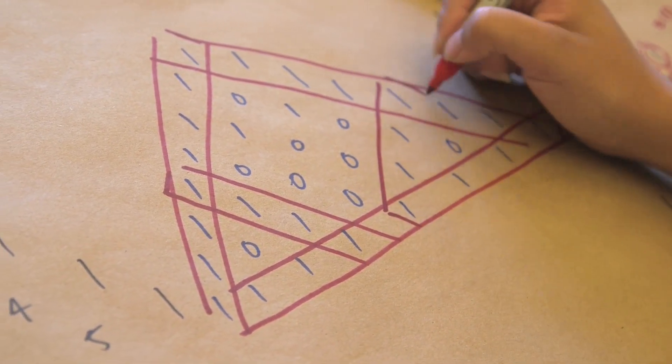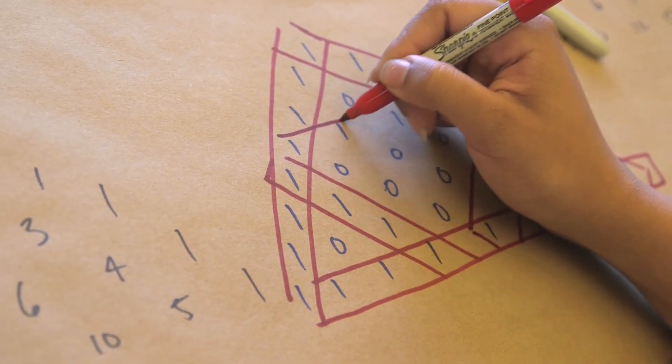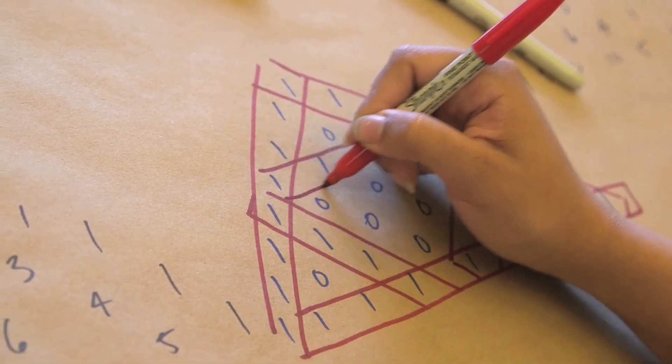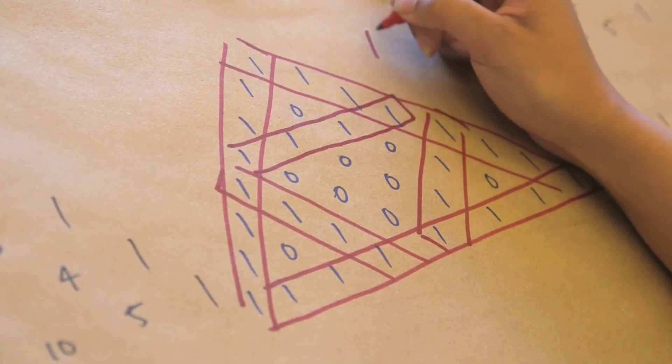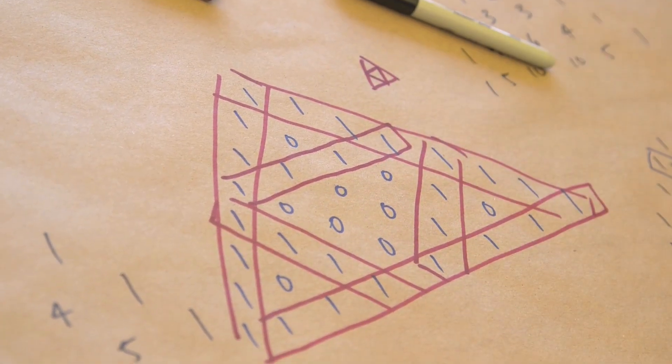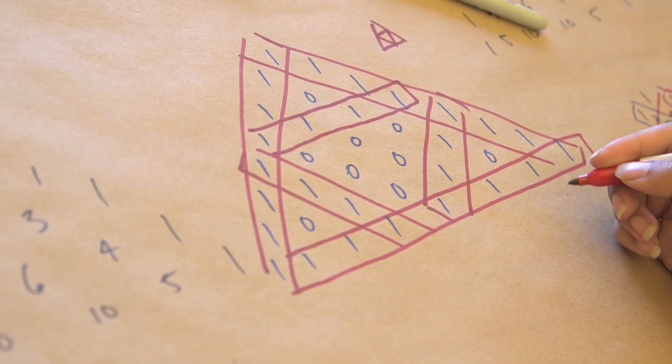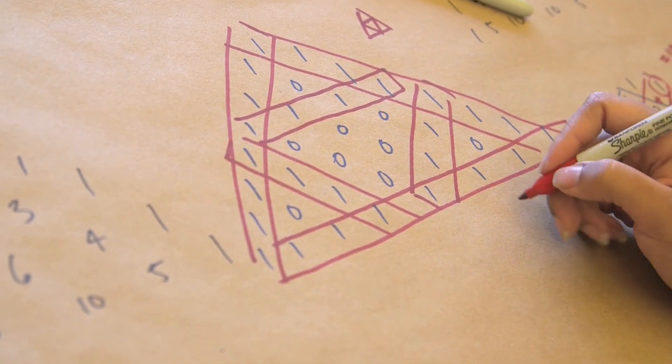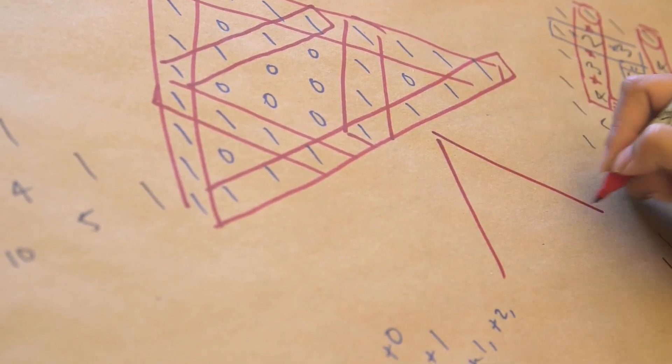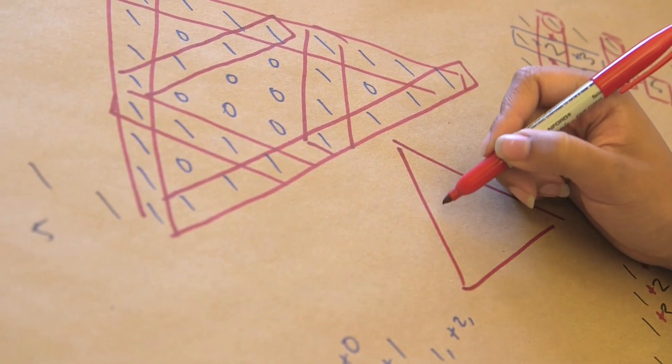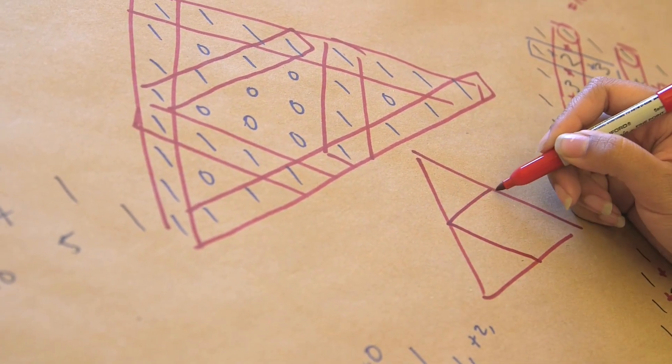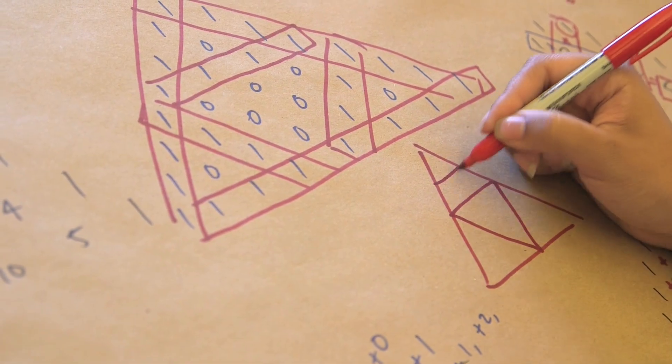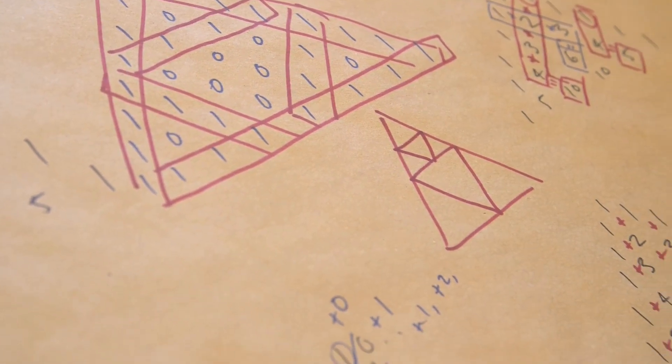And this shape should maybe start to look a little familiar if you played a Legend of Zelda before. It's also the Triforce but more importantly it's Sierpinski's triangle. So for those who don't recognize Sierpinski's triangle, I start with an equilateral triangle, I inscribe another one upside down, and then I can just keep doing this on all of the upward facing triangles as many times as I want.